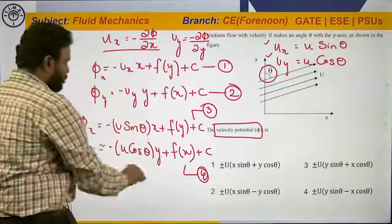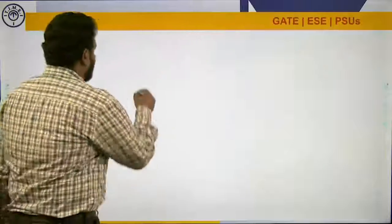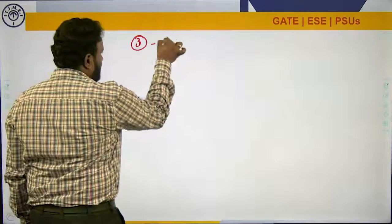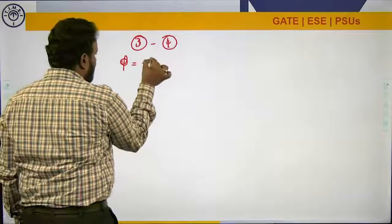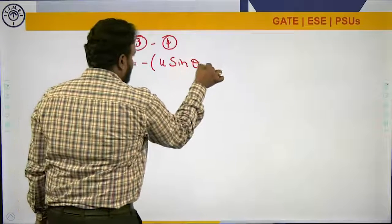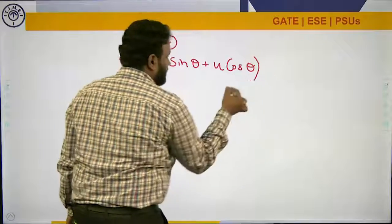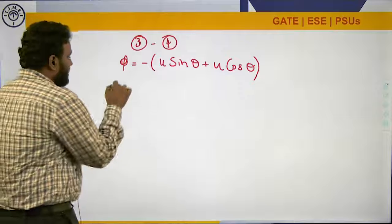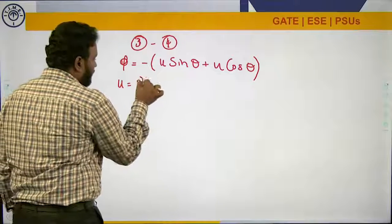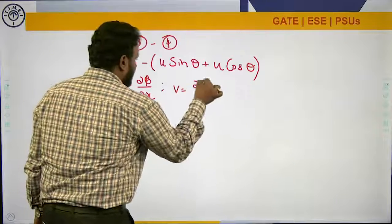Solving equations 3 and 4 together, we get φ = −u sinθ · x − u cosθ · y. Note that the velocity potential function can also be defined with the opposite sign convention as: ux = ∂φ/∂x and uy = ∂φ/∂y.